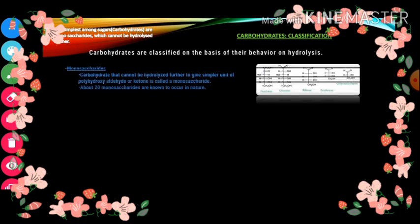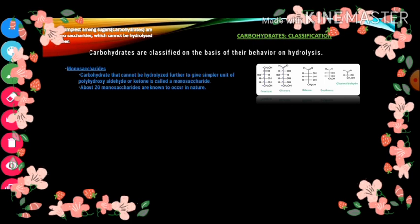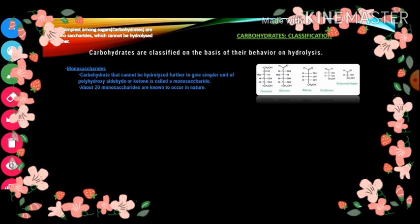The first important category is monosaccharides — the simplest form of sugar. These carbohydrates cannot be hydrolyzed further to give simpler units of polyhydroxy aldehyde or ketone. About 20 monosaccharides are known to occur in nature. Examples: fructose, glucose, and ribose.